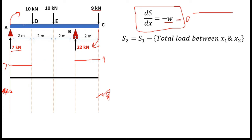Now I have to draw the shear force diagram for the DE segment and the EB segment. For that I am going to use this relationship S2 = S1 minus total load between X1 and X2. So far I used moments — using the support reaction and using the point loads. Now I am going to use this relationship.